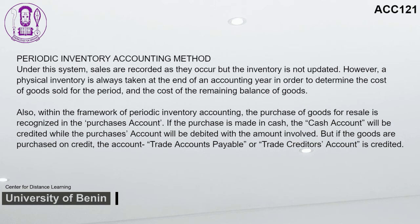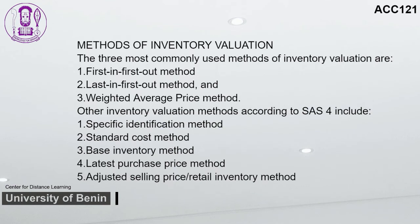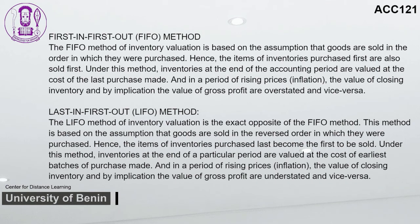Within the periodic inventory accounting framework, purchase of goods for resale is recognized in the purchases account. If cash, the cash account is credited while the purchases account is debited; if on credit, the trade accounts payable account is credited. The three most commonly used methods of inventory valuation are: 1. First In First Out (FIFO); 2. Last In First Out (LIFO); 3. Weighted Average Price Method. Other methods per SAS 4 include: Specific Identification Method; Standard Cost Method; Base Inventory Method; Latest Purchase Price Method; and Adjusted Selling Price or Retail Inventory Method.